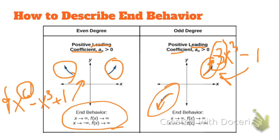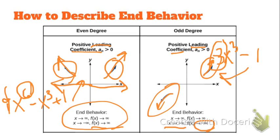Down here is how we write it. That's read as: as x approaches infinity, f of x approaches infinity. As you go to the right, as you approach infinity, y goes up. And as x approaches negative infinity — so as you look at the graph to the left — f of x is approaching infinity, so y is going up. This one's different in that it has negative infinity on the bottom part when describing what's happening as x approaches negative infinity: y is going to negative infinity as well.